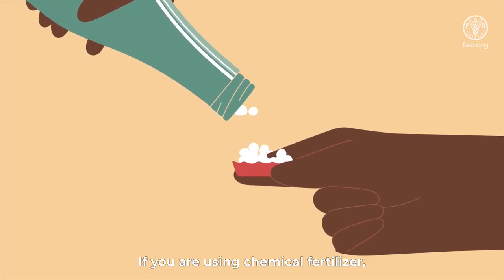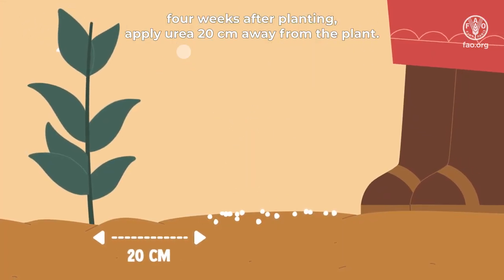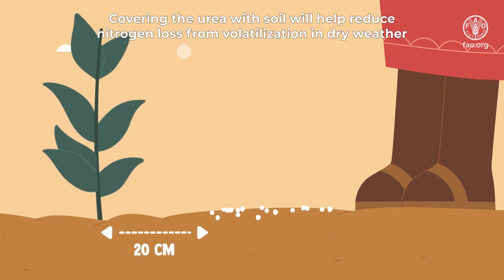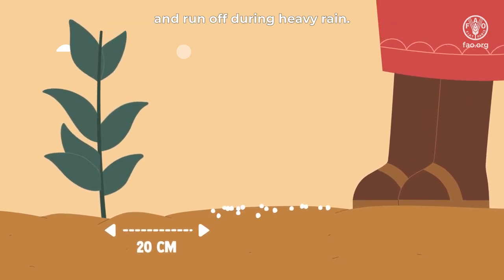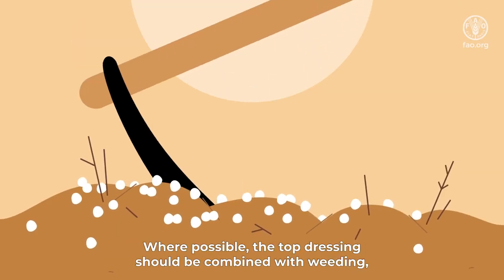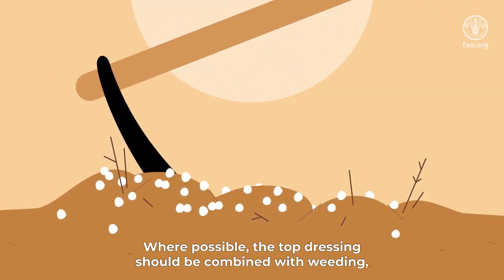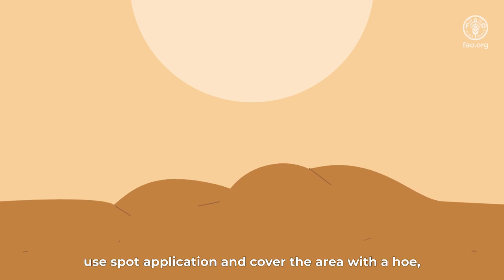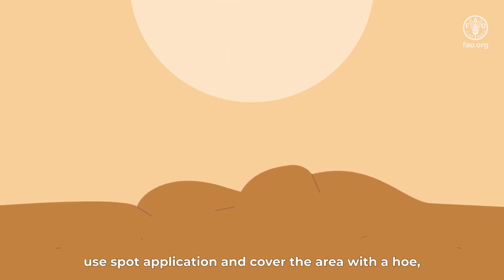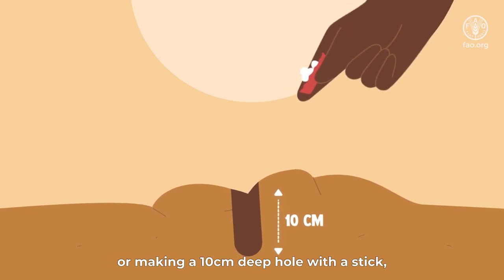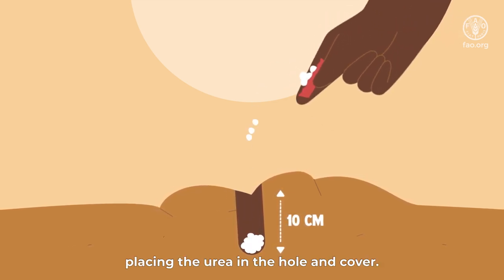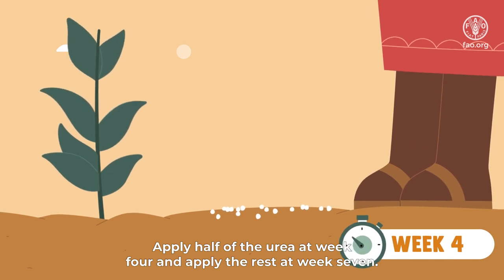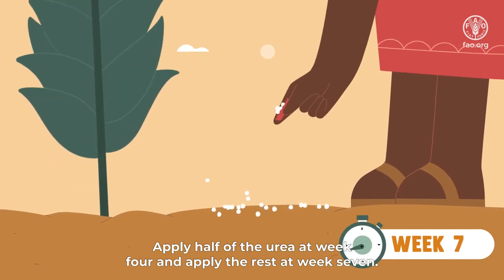If you are using chemical fertilizer, four weeks after planting, apply urea 20 centimeters away from the plant. Covering the urea with soil will help reduce nitrogen loss from volatilization in dry weather and runoff during heavy rain. Where possible, the top dressing should be combined with weeding, either using a hole or cultivator. If you are using minimum tillage practices, use spot application and cover the area with a hole, or make a 10 centimeter deep hole with a stick, place the urea in the hole and cover. For loam soil, apply all the urea at week four. For sandy soil, apply half of the urea at week four and apply the rest at week seven.